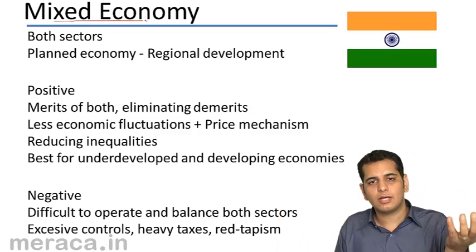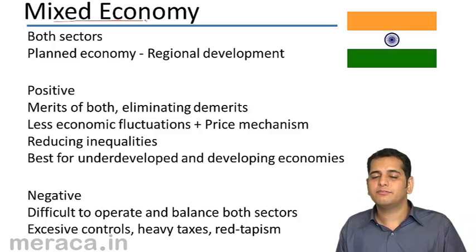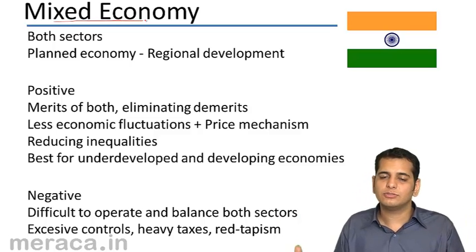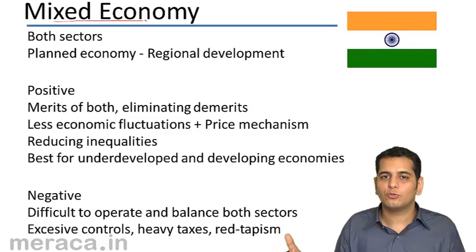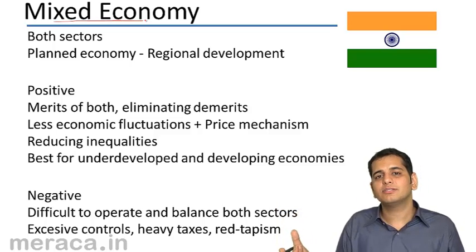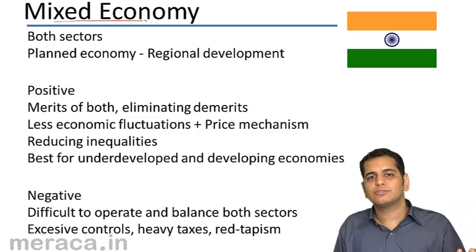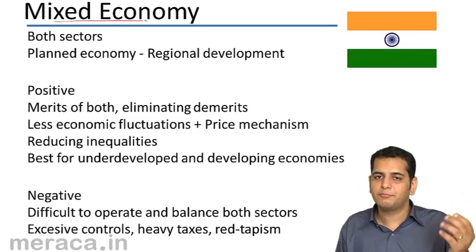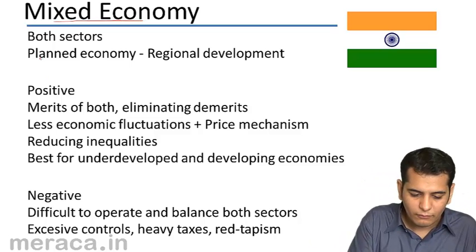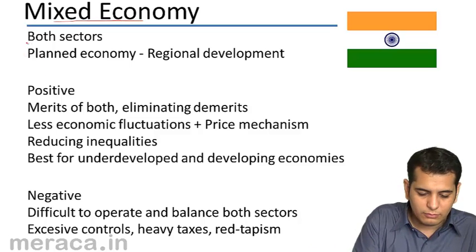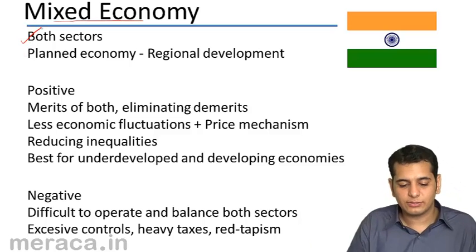Private individuals are allowed to own, buy, and sell the factors of production, while the government also has control over them. There are some industries which are run by the government, and other industries are run by private individuals. So both sectors co-exist.